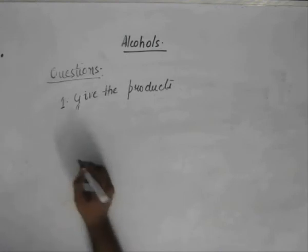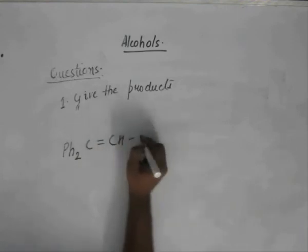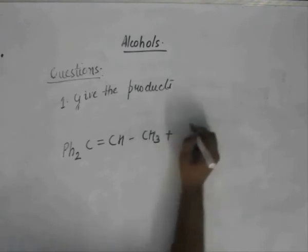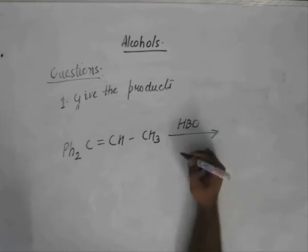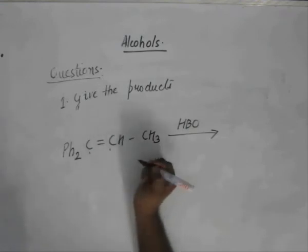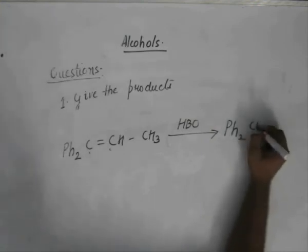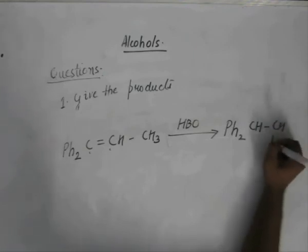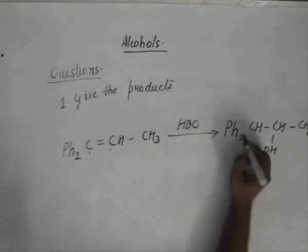Moving on to BH3 followed by H2O2/OH-. If you observe carefully, the thing that we are doing here is hydroboration oxidation. The thing that we get is anti-Markovnikov product. So the anti-Markovnikov product that we get is CH2OH-CH-CH3. I hope you understand this.